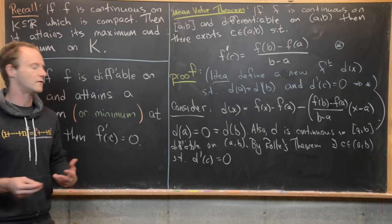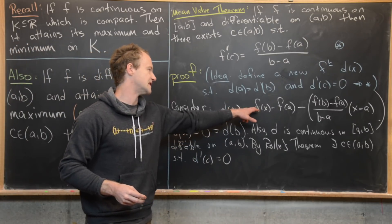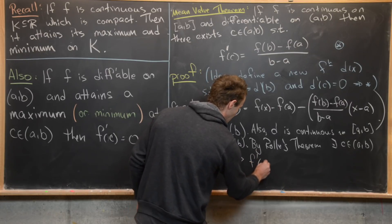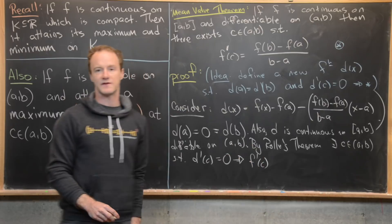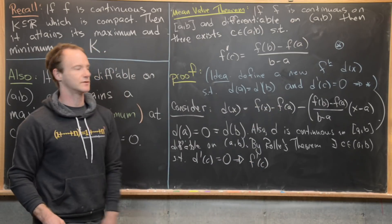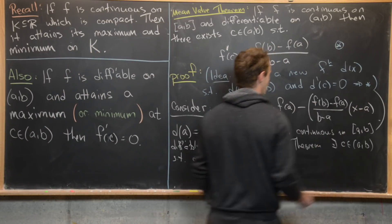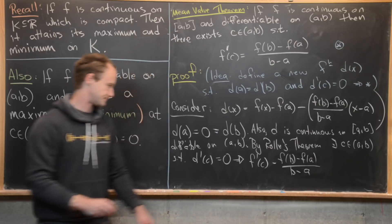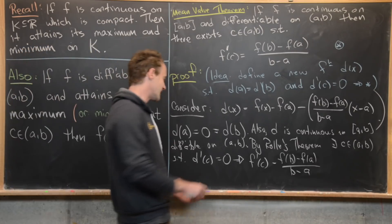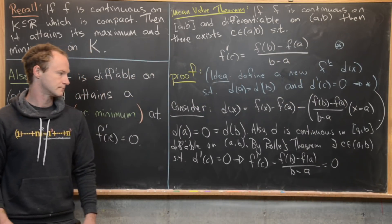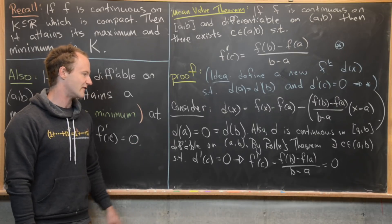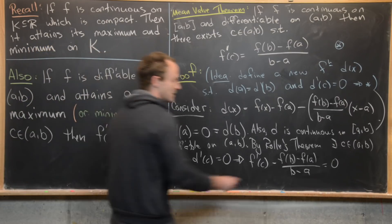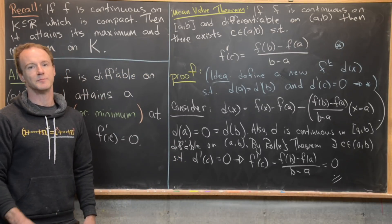We can use the sum rule for derivatives to calculate d prime of C from the definition of d of x. We get d prime of C equals F prime of C — the derivative of the F of x part — minus F of b minus F of a over b minus a, since F of a is a constant contributing zero. We know d prime of C equals zero, so F prime of C minus (F of b minus F of a)/(b minus a) equals zero. Rearranging gives F prime of C equals F of b minus F of a over b minus a, which is exactly the mean value theorem. The proof is complete.